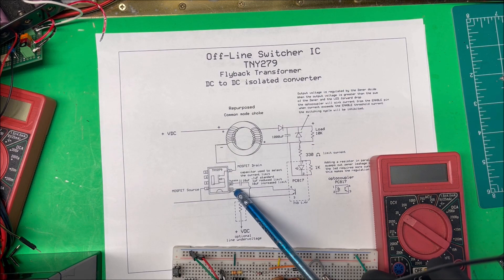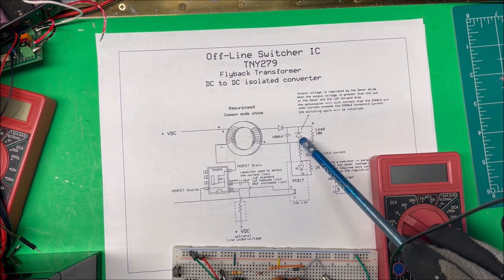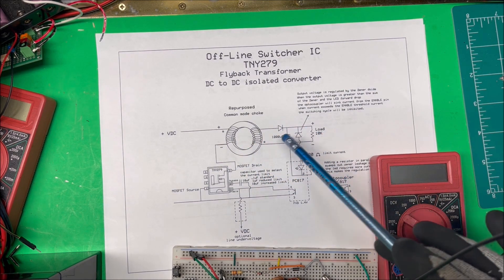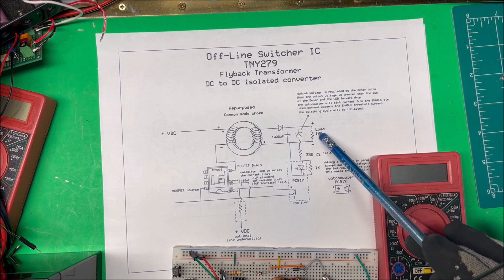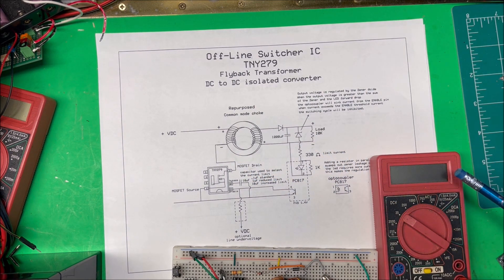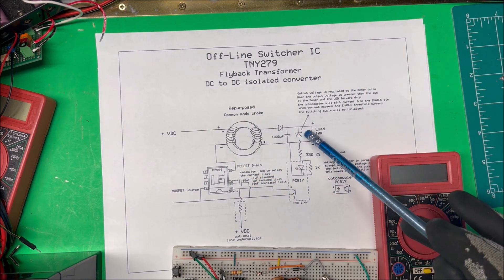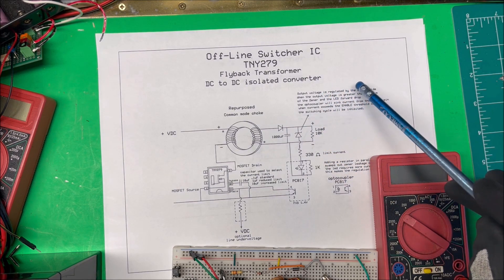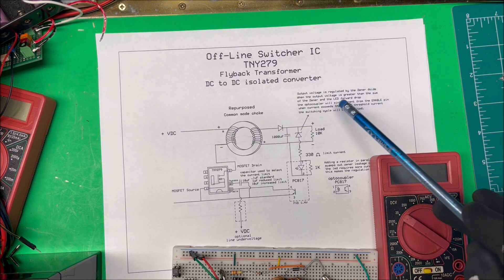On the old setup, we had a diode, a capacitor, and the load, and we controlled that with the PWM controller. In this case, we're going to use a zener. The output voltage is going to be regulated by the zener diode. When the output voltage is greater than the sum of the zener and the forward voltage drop...